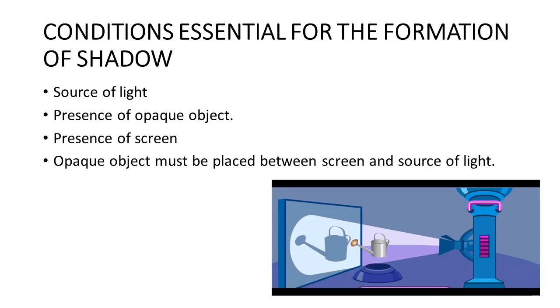Now, let's know about the conditions essential for the formation of a shadow. The first condition is that there must be a source of light, such as a bulb or a tube light. Without a source of light, shadow cannot be formed.